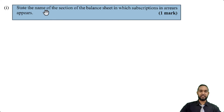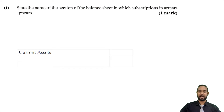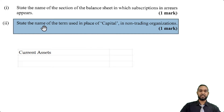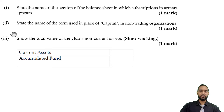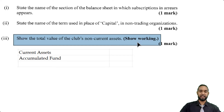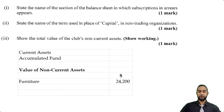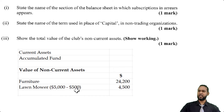For the short theory questions: subscriptions in arrears is accrued revenue and appears in the current assets section of the balance sheet. The term used in place of capital in non-trading (non-profit) organizations is accumulated fund. To show the total value of the club's non-current assets: furniture at $24,200 plus the lawn mower — cost $5,000 minus depreciation $500 equals $4,500 — gives a total non-current asset value of $28,700.